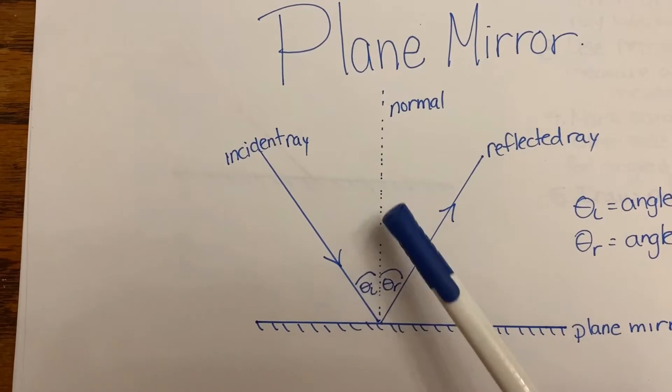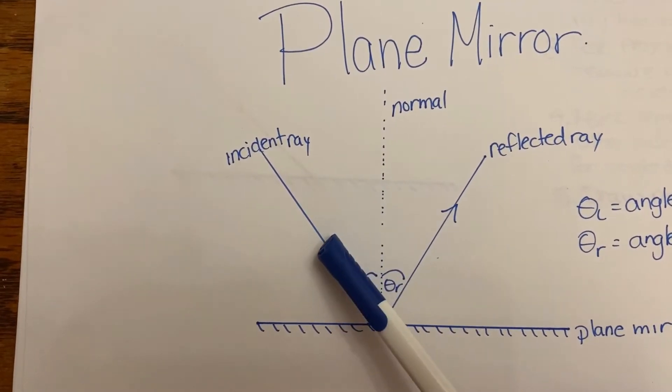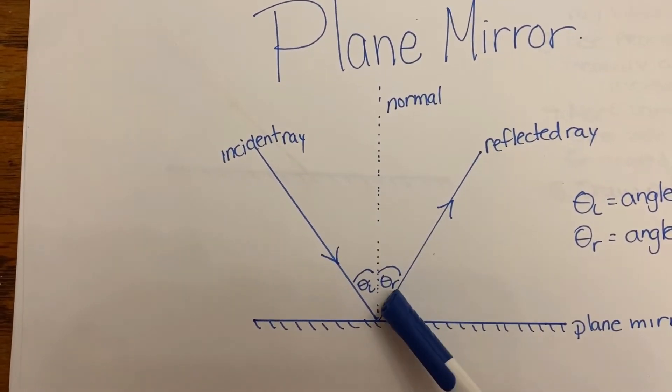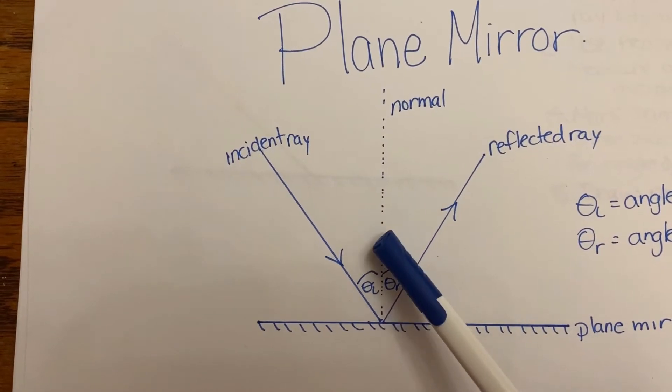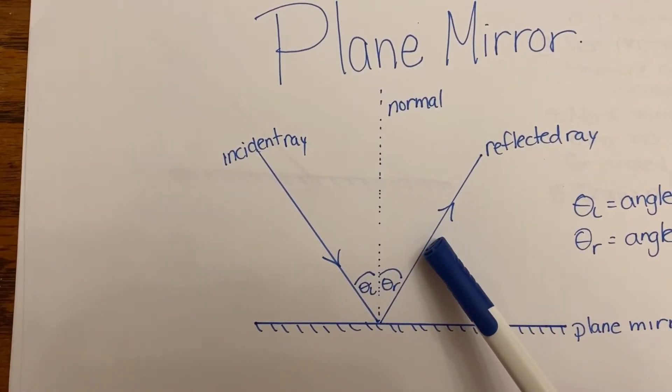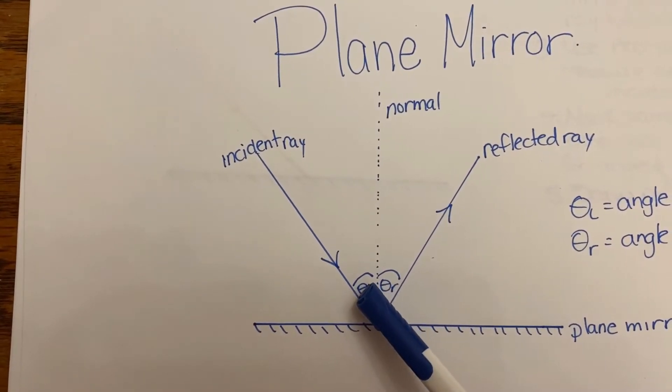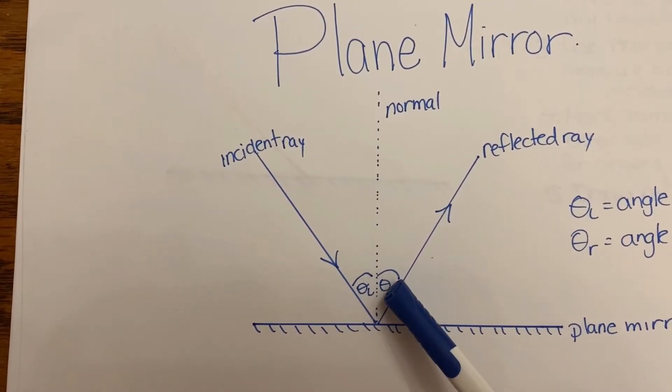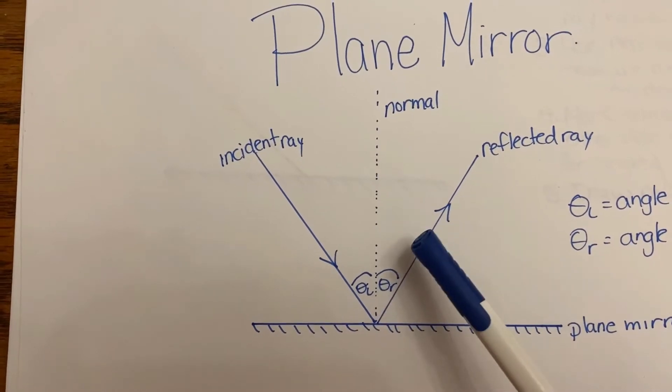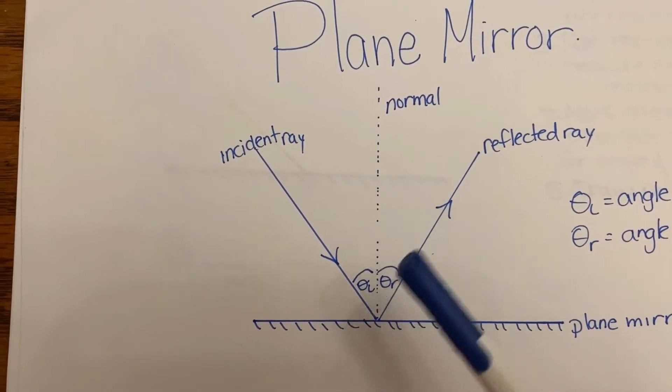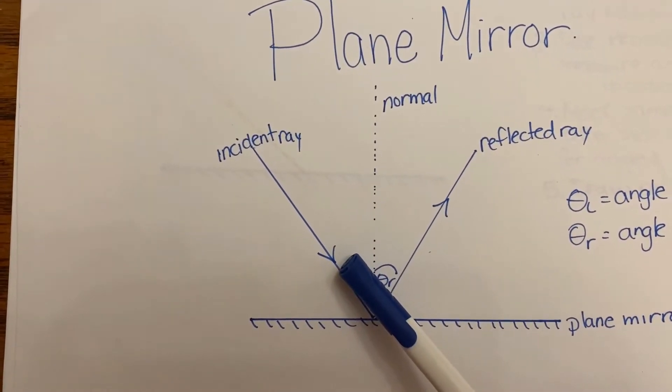The angle of incidence is in between the normal and the incident ray. The angle of reflection is in between the normal and the reflected ray. These two are always the same number. They're the same value. So if this is 20 degrees, the angle of reflection is 20 degrees. If the reflected ray is 80 degrees, the angle of incidence is 80 degrees.